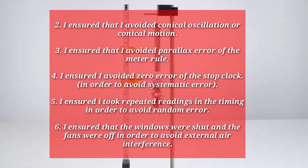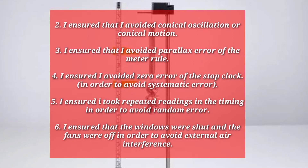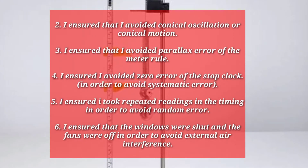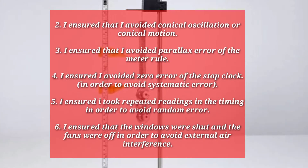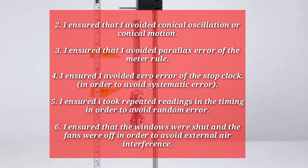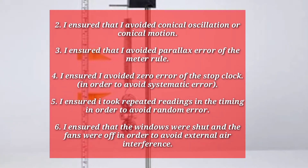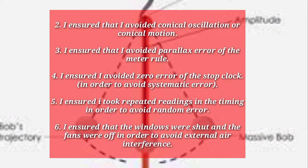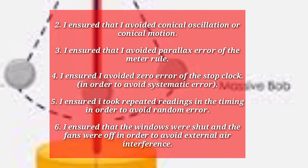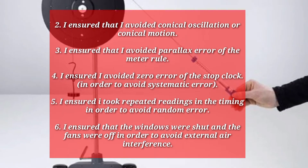2. I ensured that I avoided conical oscillation or conical motion. 3. I ensured that I avoided parallax error of the meter rule. 4. I ensured I avoided zero error of the stop clock in order to avoid systematic error. 5. I ensured I took repeated readings in the timing in order to avoid random error.